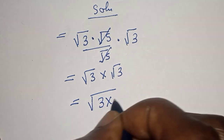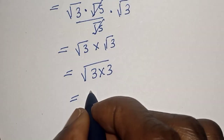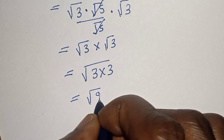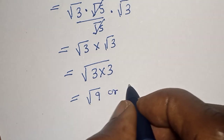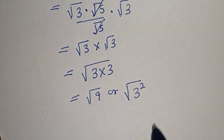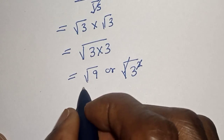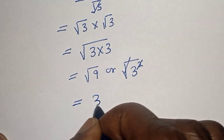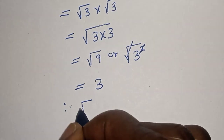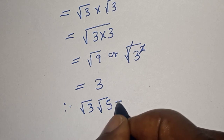Square root of 3 multiplied by square root of 3 is equal to square root of 3 multiplied by 3, which is equal to square root of 9, or square root of 3 squared. These cancel, giving us 3.